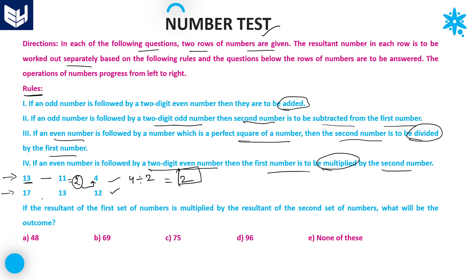Now see the second row: 17 followed by 13. Odd number followed by a two-digit odd number — rule 2 applies, so the second number is subtracted from the first: 17 minus 13 equals 4. Now 4 is even, followed by 12, a two-digit even number. According to rule 4, both are multiplied: 4 into 12 equals 48. This is the resultant of the second row.